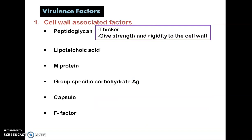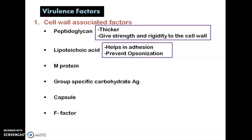Cell wall associated factors include peptidoglycan, lipoteichoic acid, M protein, group specific carbohydrate antigen, capsule, and F factor. In case of all gram positive organisms, the peptidoglycan is thicker and gives strength and rigidity to the cell wall. Lipoteichoic acid helps in adhesion and prevents opsonization. M protein is a fimbria-associated protein.